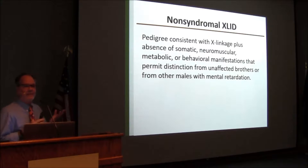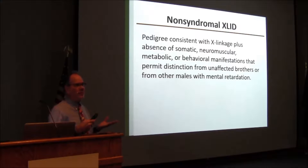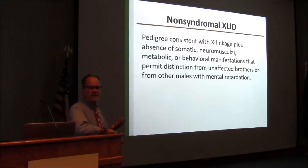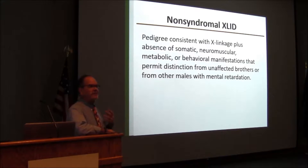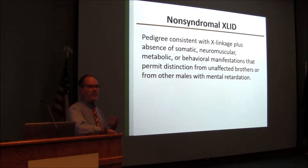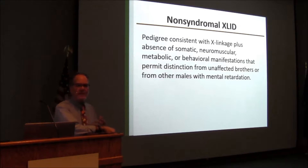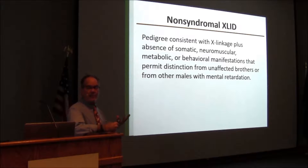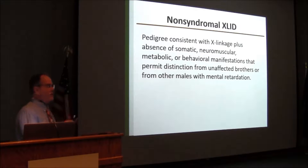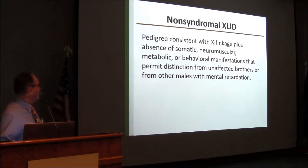This is a rough delineation which can actually change as you identify the causation in the family. For example, the family originally described by Snyder Robinson in 1969 as non-syndromic X-linked ID is actually Snyder Robinson syndrome, because they have a defect in spermine synthase synthesis — a biochemical marker distinguishing affected males. On further clinical evaluation they also have osteoporosis, skeletal abnormalities, and low muscle mass. So that family moved from non-syndromal to syndromal with further study, which makes the delineation between non-syndromal and syndromal a little problematic.